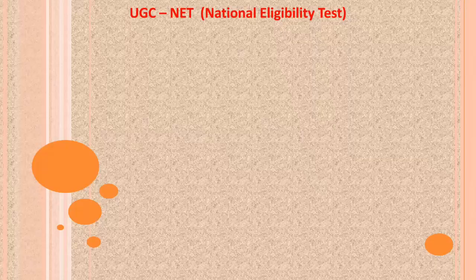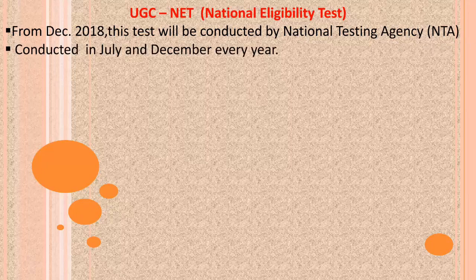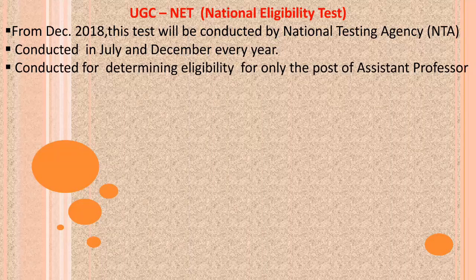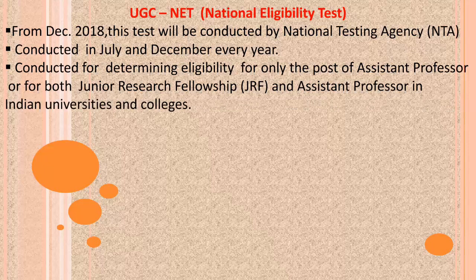UGC NET Examination is called the National Eligibility Test. From December 2018, this test is conducted by the National Testing Agency, called NTA. It is conducted two times a year, in July and December. This test determines eligibility for the post of Assistant Professor only, or for both Junior Research Fellowship (JRF) and Assistant Professor in Indian universities and colleges.